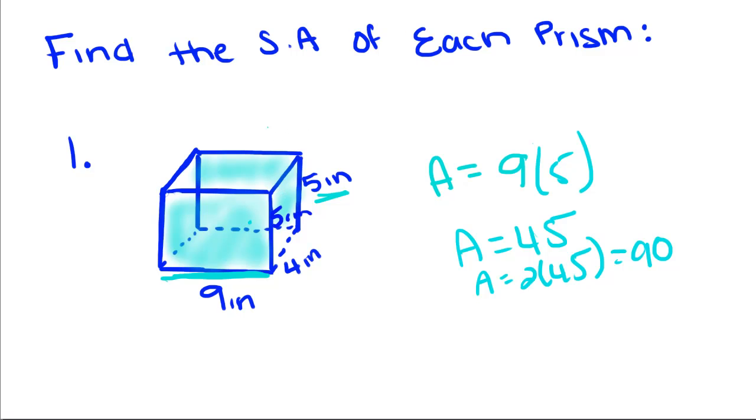So now we're going to do this side right here and this left side right here. And since those are congruent, we're going to do the same thing we did with this one. So we're going to take the area of this one, which is 4 times 5, which will give us 20, and we're going to times that by 2 to get 40. Now that takes care of both this side and this side.